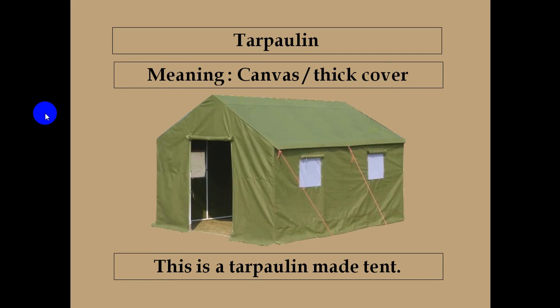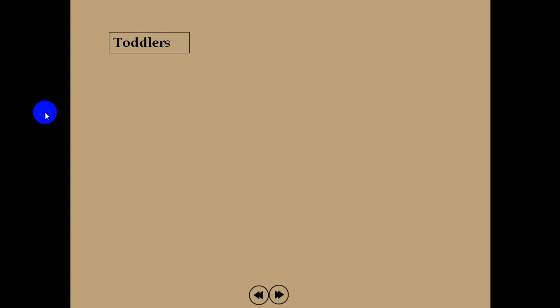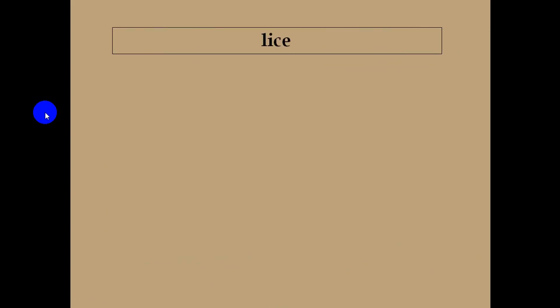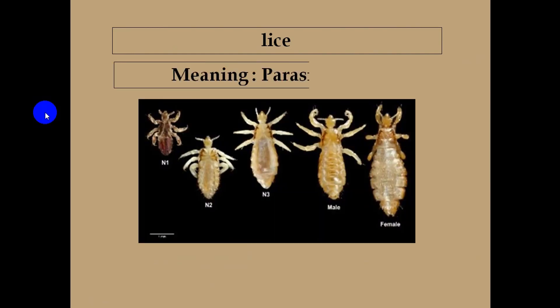Another vocabulary is Toddlers, which means Infant, Minor, Baby, or Kid. Toddlers play with dogs or other pets in the dust. Another common vocabulary is Lice, which means Parasites or Fleas. Village women pick out lice sitting in a row.